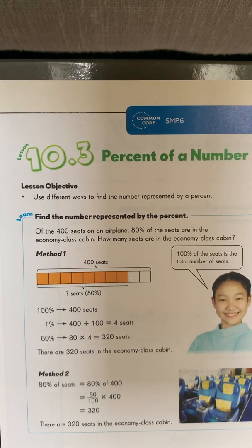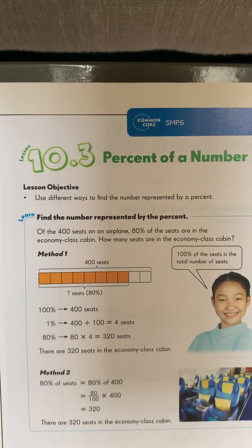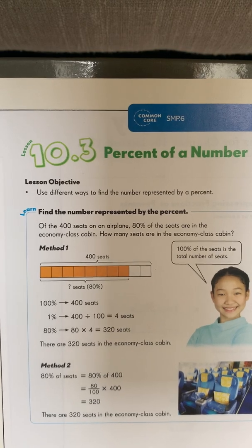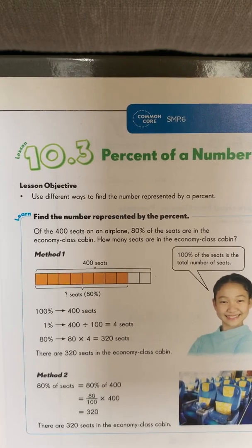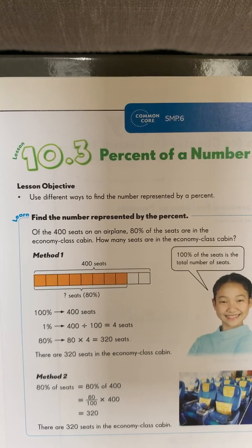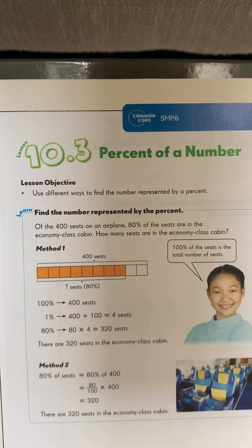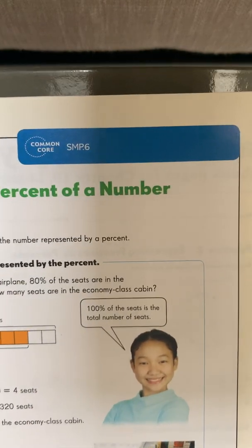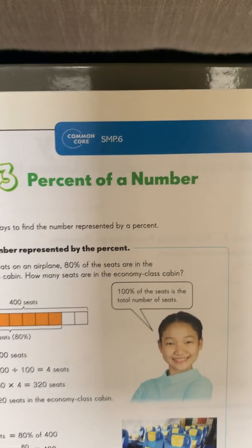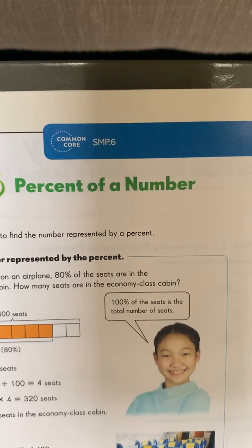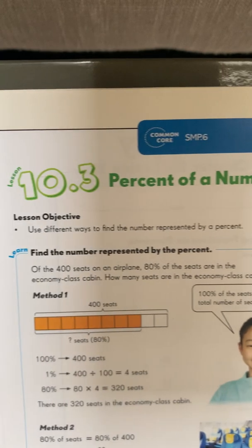If you look at this bar model, we are going to be looking at a part whole bar model, which is something that we've been looking at all year. And I'm going to show you what the holes are and what the parts are as we go through. So let's read the problem. It says, of the 400 seats on an airplane, 80% of the seats are in the economy class cabin. How many seats are in the economy class cabin? I'm going to put my book down so that we can go through both of these methods together.